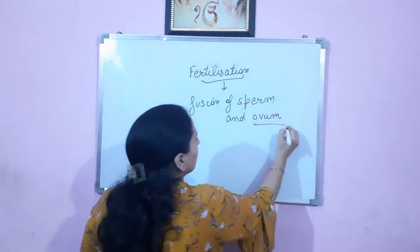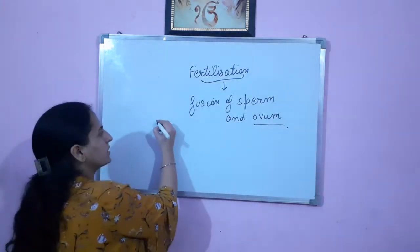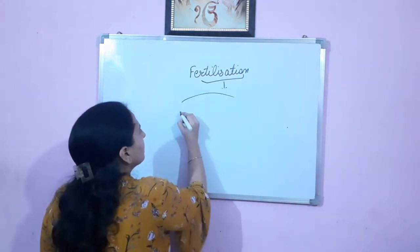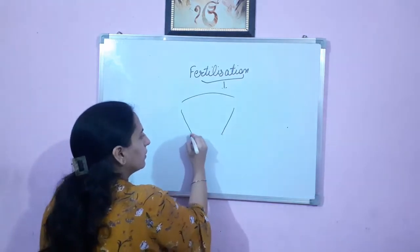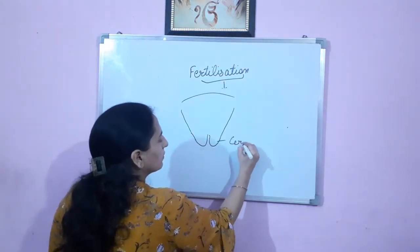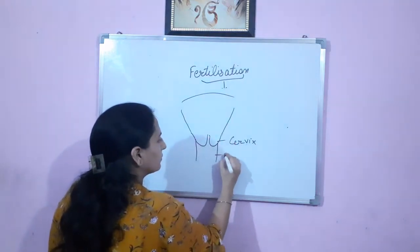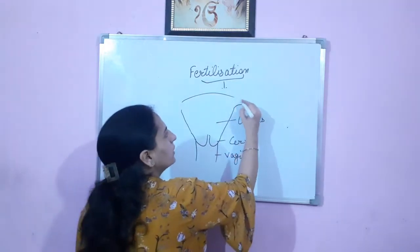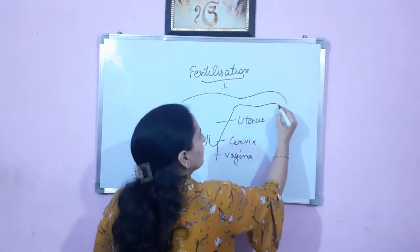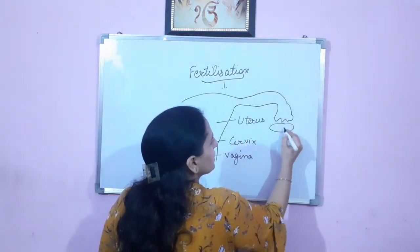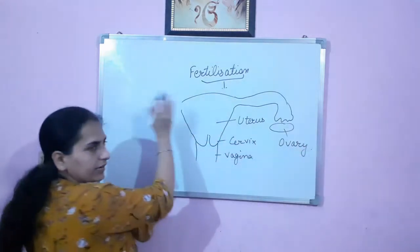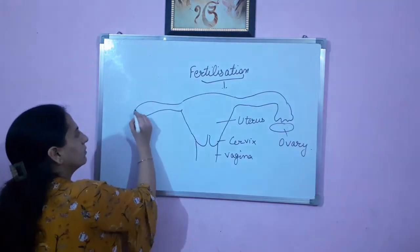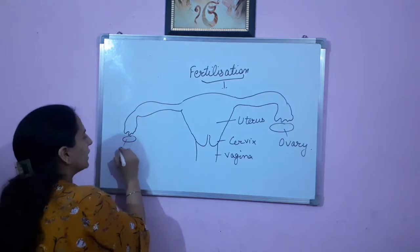Let me draw the female reproductive system. So like this, uterus is there. At the end, cervix is there. This is vagina, uterus, and then there is fallopian tube. This we have discussed in detail, and here ovaries are there — one ovary on each side.